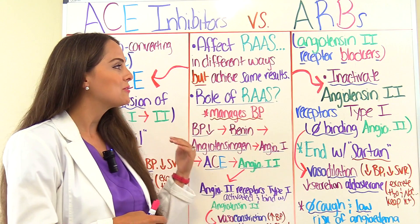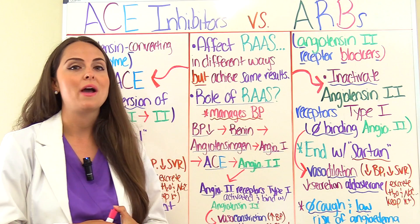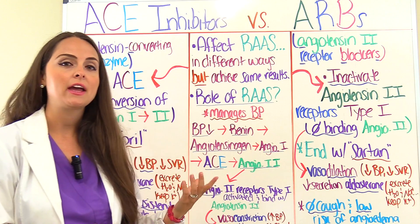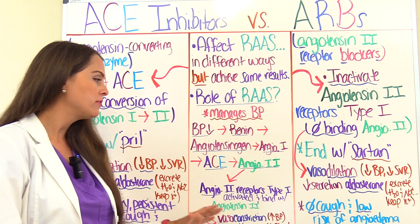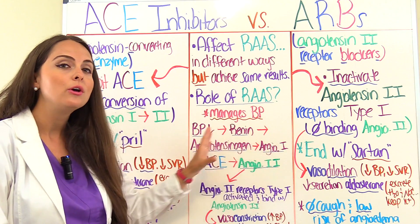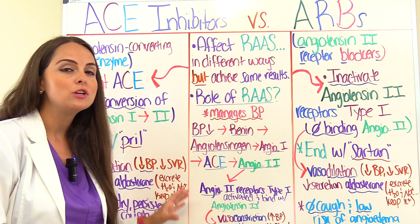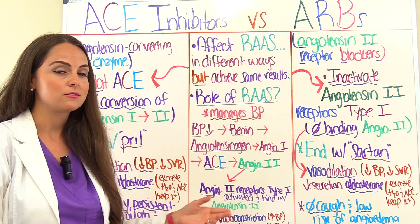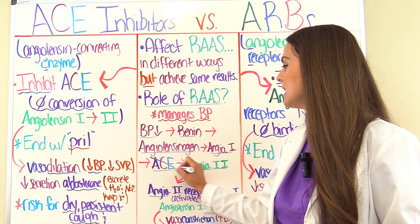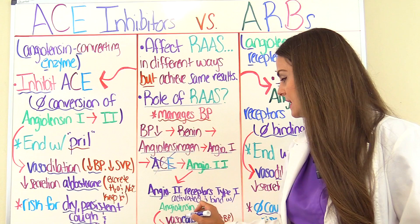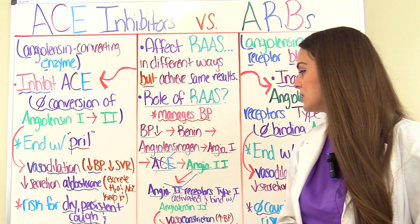ARBs are going to inactivate the angiotensin II receptor sites type 1. So with ARBs, we will have the conversion of angiotensin I to angiotensin II — ACE does its job — but what we prevent is angiotensin II being able to bind with those type 1 receptors, so you don't get the effects of angiotensin II. ACE inhibitors prevent ACE; ARBs prevent the activation of these receptor sites. Either way, they are affecting how angiotensin II works.